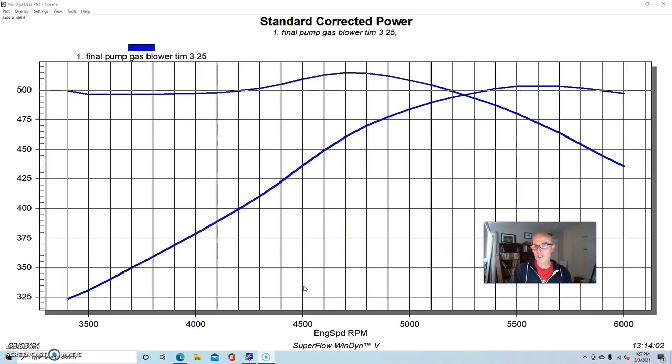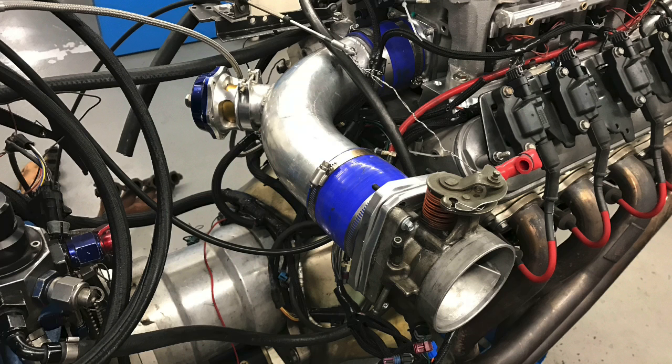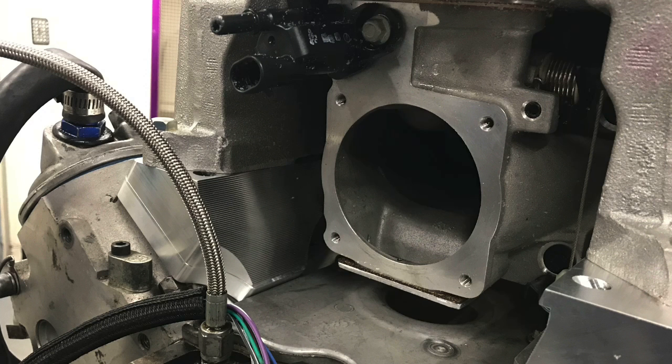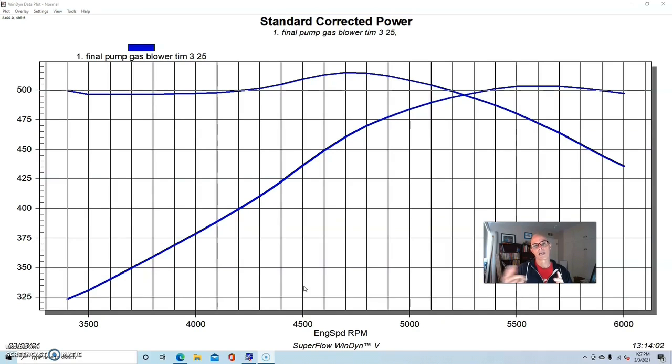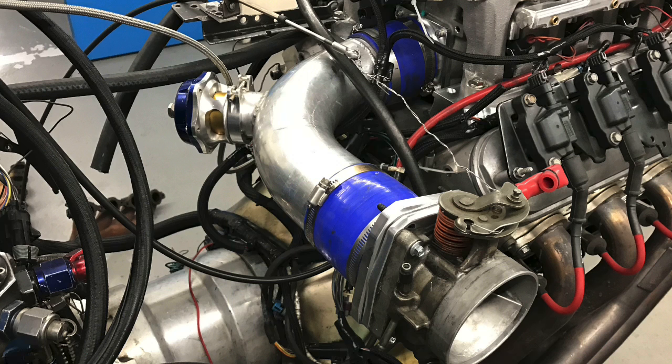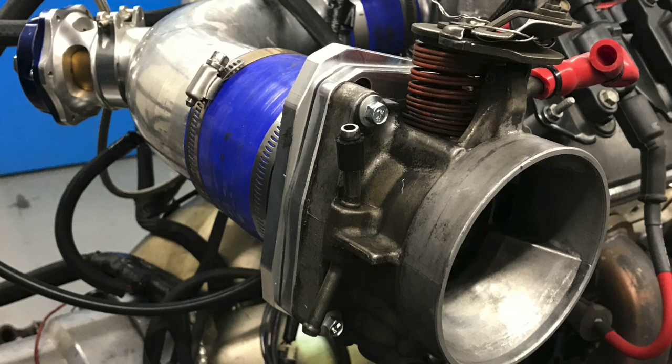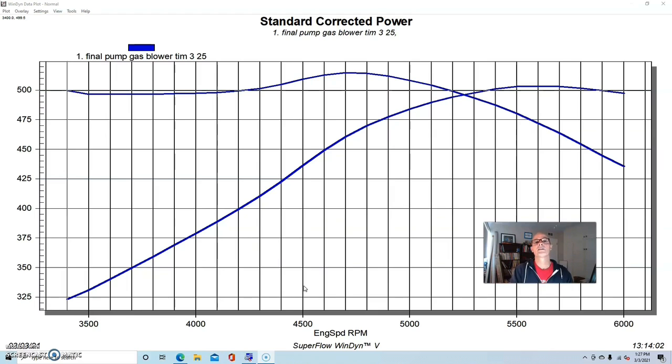But this first test was run with our stock truck throttle body, and the truck throttle body was run using a 3.5 inch section of aluminum tubing. The guys from Mac Daddy Parts made an adapter to bolt to that supercharger. Then we ran a 3.5 inch elbow off of that, and then using another adapter, mounted the stock truck throttle body to that elbow.